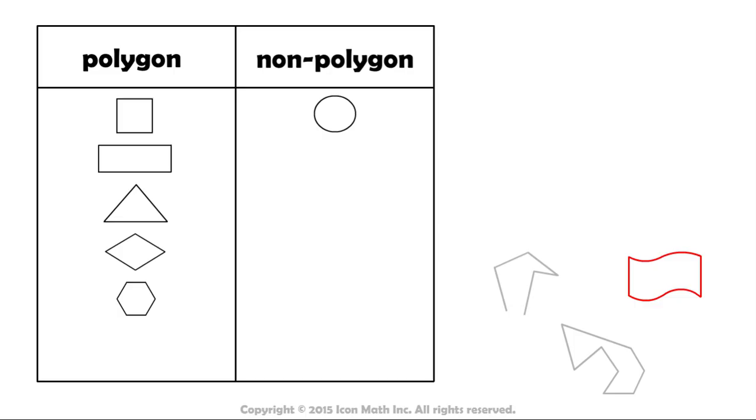This shape is not a polygon. It is a closed shape, and it has two line segments, but it also has curves. Remember, polygons must be made up of line segments only.